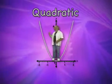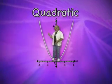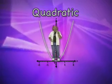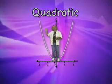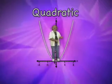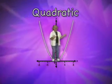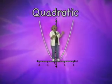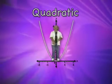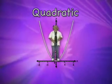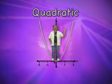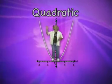So, if I slid down this part of the function — and trust me, I'd injure something if I tried — I would be decreasing until I got to this point. Once I moved to the right of this point and tried to climb this function — also not a good idea — I'd be increasing. But at this point, the point (0, 0), I'm neither climbing up nor sliding down.